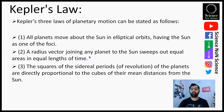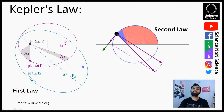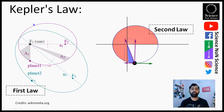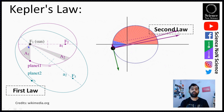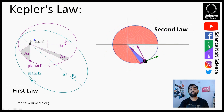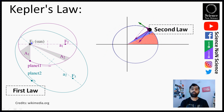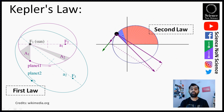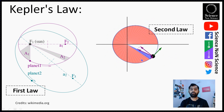Here is a depiction of Kepler's first law, in which you can see the Sun acts as one of the foci of the ellipse. Two planets — planet number one and planet number two — are going around the Sun around the F1 point in an elliptical orbit.